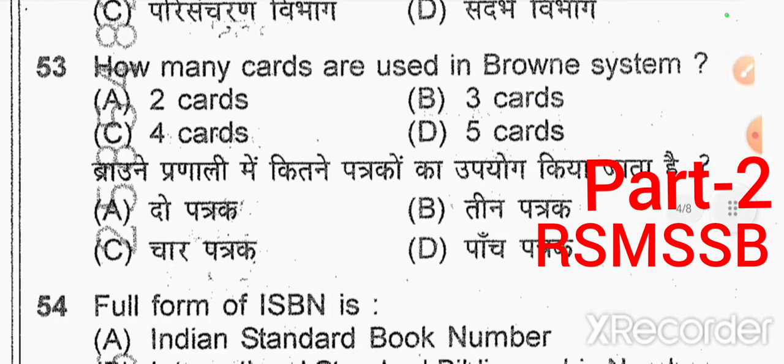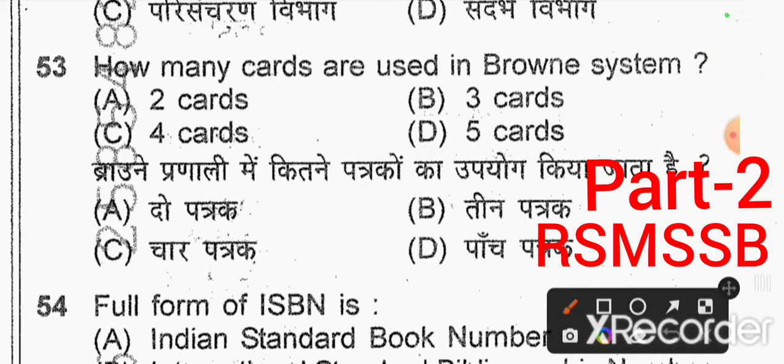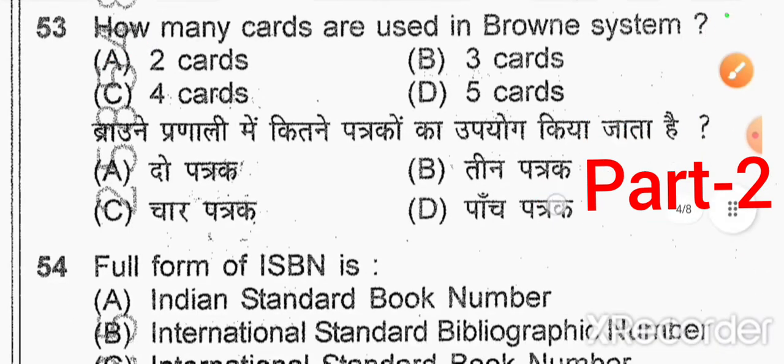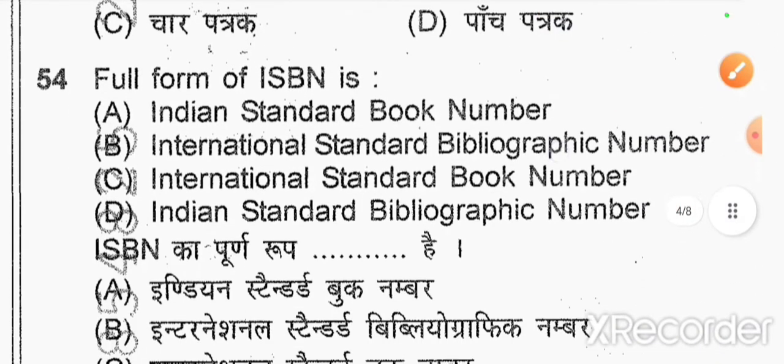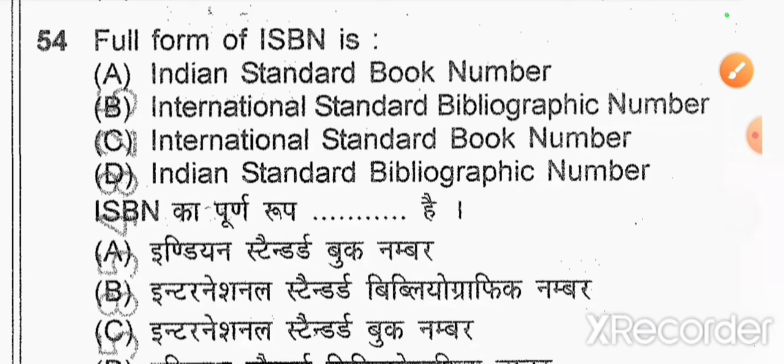How many cards are used in the Brownie system? The option is A. The full form of ISBN is — option C — International Standard Book Number. That is the answer.